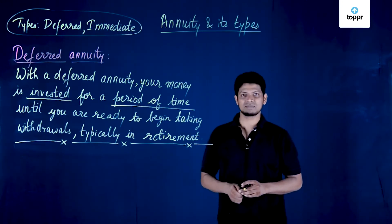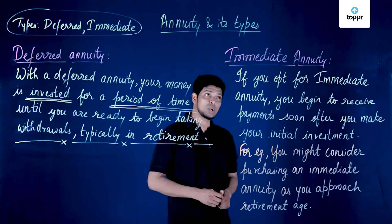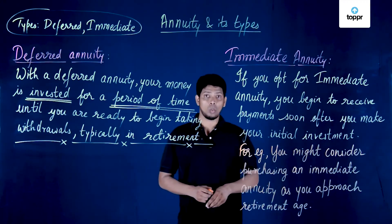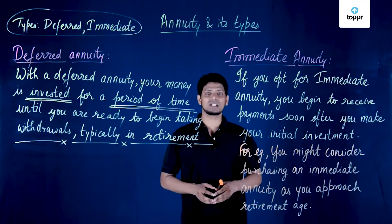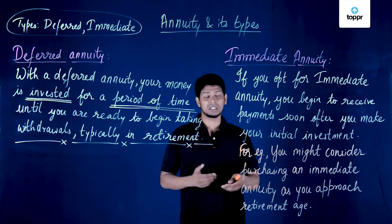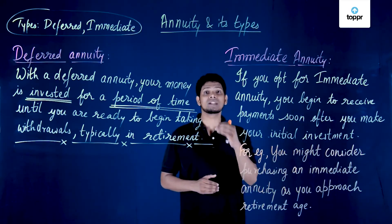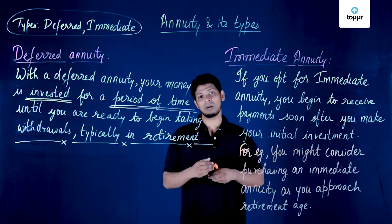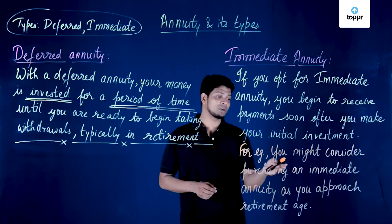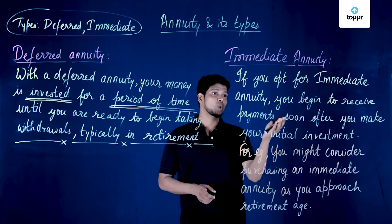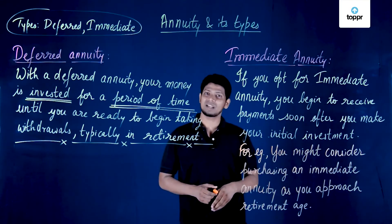With an immediate annuity, you begin to receive payments soon after you make your initial investment. For example, if you have not planned for retirement but are approaching retirement age, you should go for an immediate annuity — you might consider purchasing one as you approach retirement age, and once you make the initial investment you start receiving the amount.